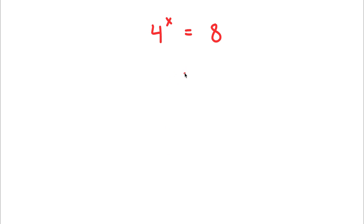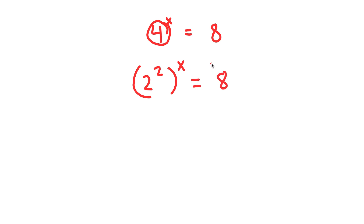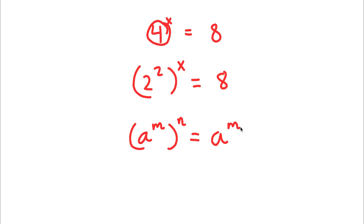To solve 4 to the power of x equals 8, I'm going to start by rewriting 4 as 2 to the power of 2. So now I have 2 to the power of 2 to the power of x is equal to 8. Using the rule that a to the power of m to the power of n equals a to the power of m times n, this becomes 2 to the power of 2x. So now I have 2 to the power of 2x is equal to 8.